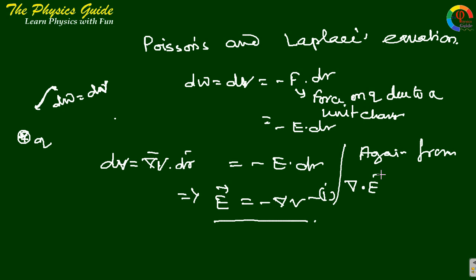...del dot E equals rho by epsilon naught. So just put E equals minus del V, that is del dot (minus del V) equals rho by epsilon naught, that implies minus del square V equals rho by epsilon naught. This gives del square V equals minus rho by epsilon naught.